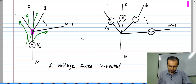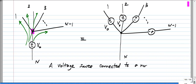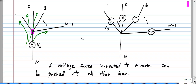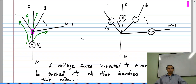A voltage source connected to a node can be pushed through that node into all the other branches connected to it. This result is sometimes useful for quick and easy understanding of certain types of circuits, and also useful for certain types of circuit analysis and proving other circuit properties.